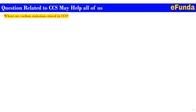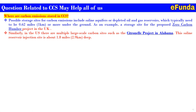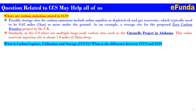Now, some questions related to CCS. First question: where are carbon emissions stored in CCS? Possible storage sites include saline aquifers or depleted oil and gas reservoirs, typically needing to be 0.62 miles (1 km) or more underground. For example, a storage site for the proposed Zero Carbon Humber project in the UK, and in the US, the Citronelle project in Alabama, where the saline reservoir injection site is about 1.8 miles (2.9 km) deep.